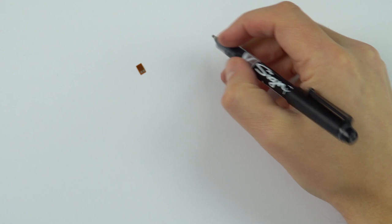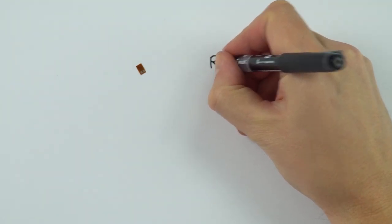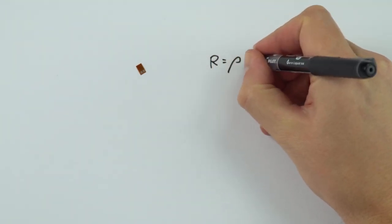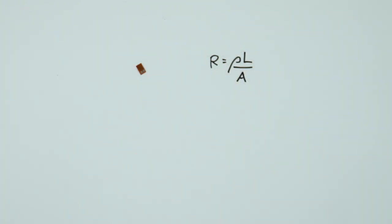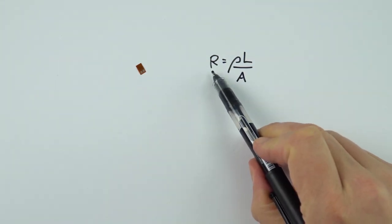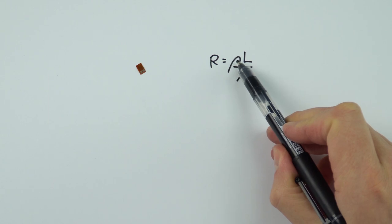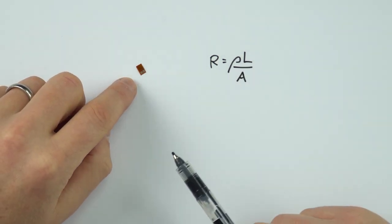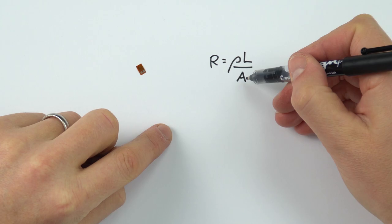There's a formula that says the resistance is equal to rho L over A. So if we have a wire, the resistance is going to depend upon the resistivity, which in this case is going to stay the same. It depends upon the length and also the area.